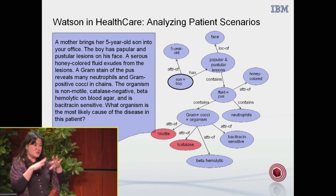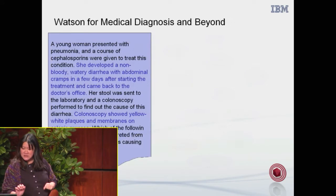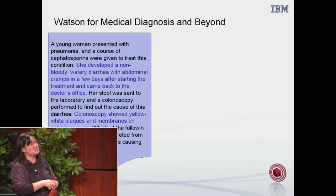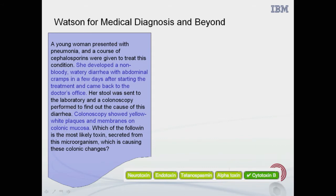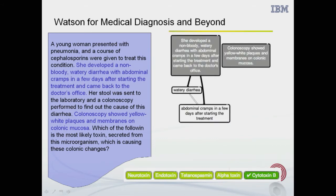So Watson — this is the first step it does, and what it goes on to do then is try to do diagnosis. So for a different example, there's another person who developed a non-bloody, watery diarrhea with abdominal cramps. We extract the important parts: we have watery diarrhea, we have abdominal cramps. So far we've got lesions, pus, and diarrhea.